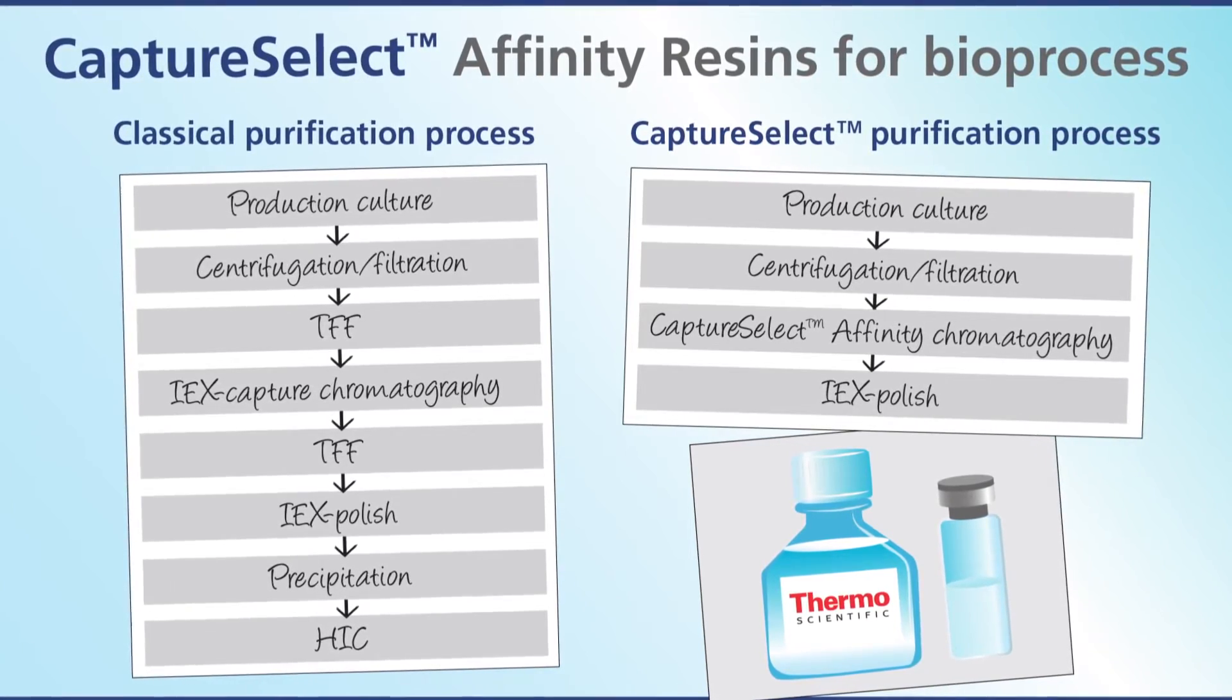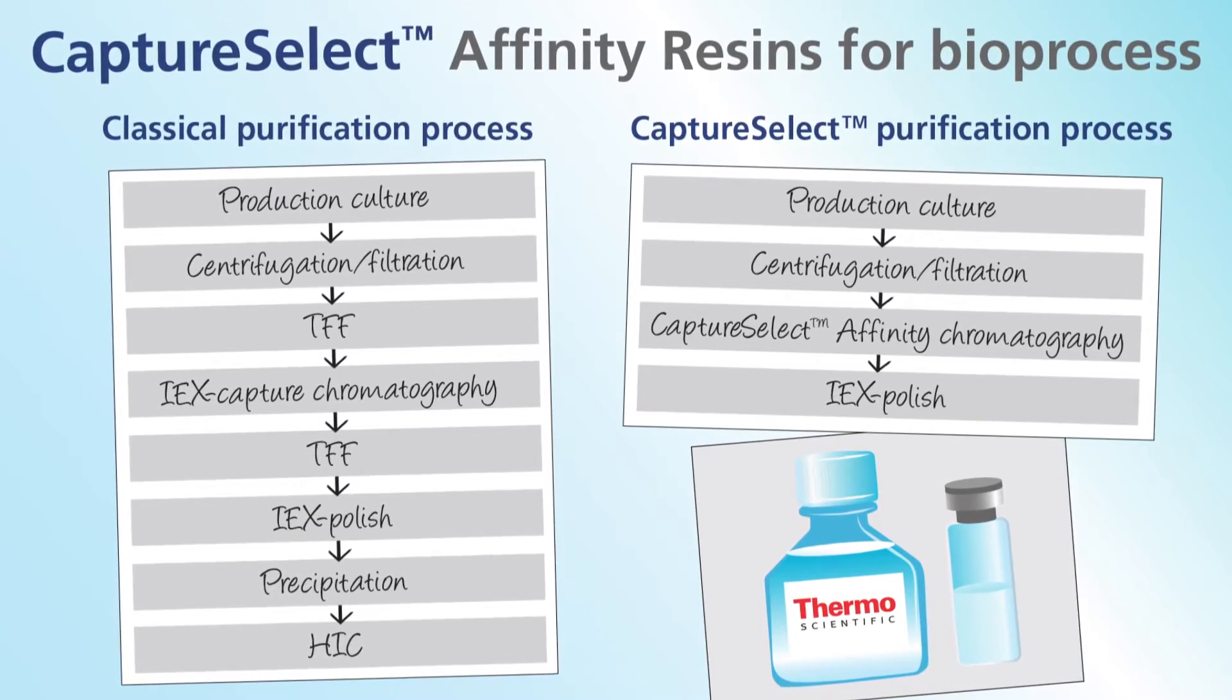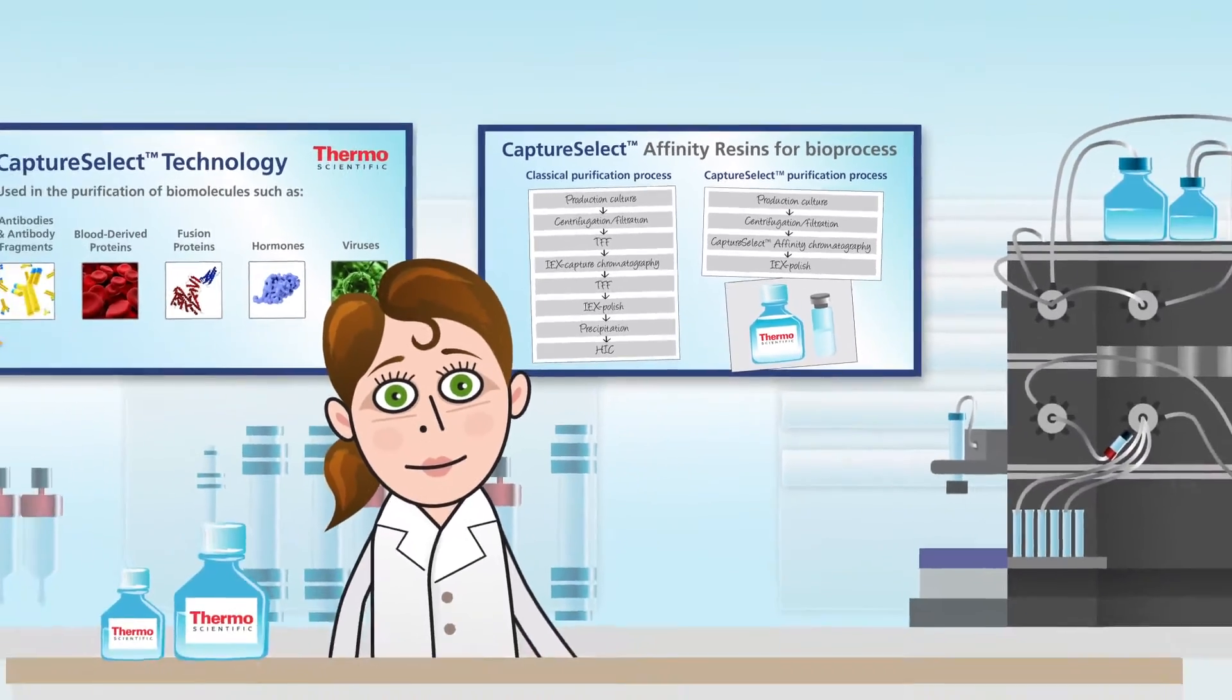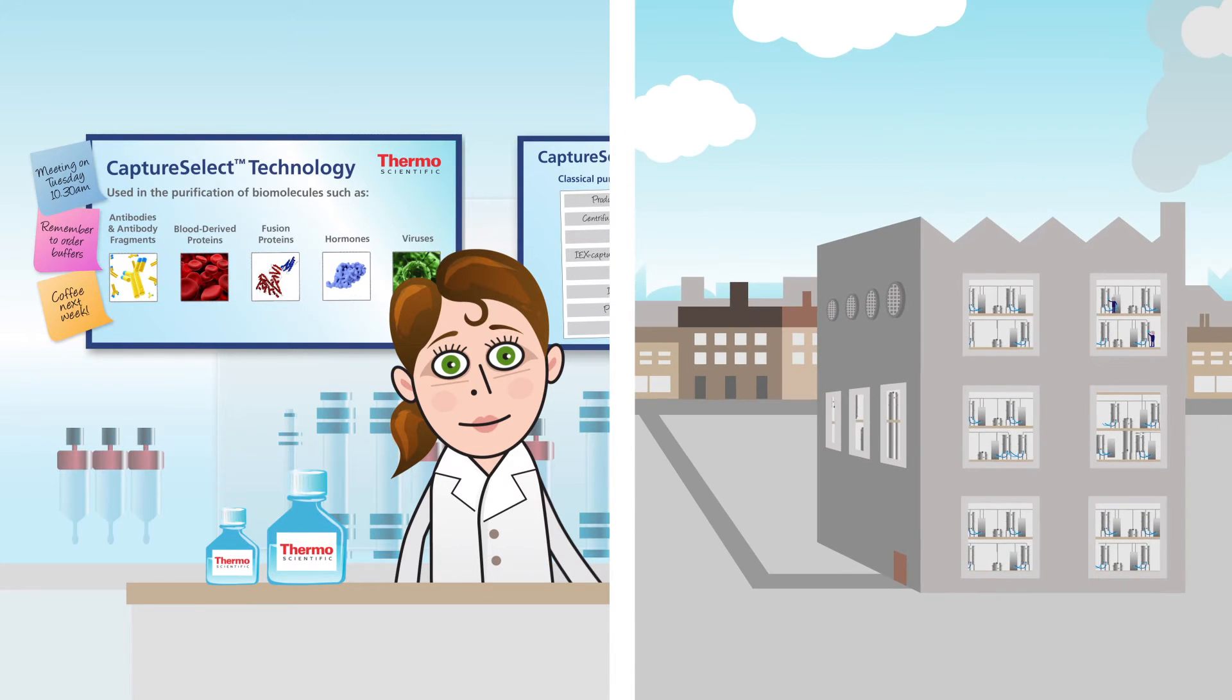At process scale, CaptureSelect affinity resins help reduce the number of chromatography steps required, leading to more efficient purification. Immobilization onto resins suitable for large-scale bioprocess applications make these ligands great tools for downstream processing.